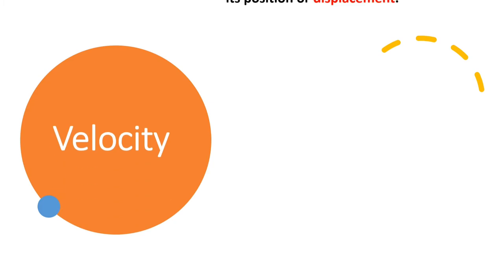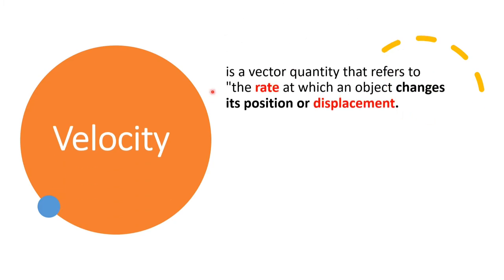On the other hand, velocity is a vector quantity because we need to determine both the magnitude and the direction. Velocity is the rate at which an object changes its position. For speed, we need the value of distance; for velocity, we need the value of displacement. Since displacement is a vector quantity, velocity is also a vector quantity. I hope you understand the difference between speed and velocity.